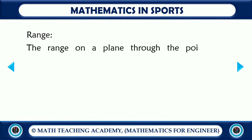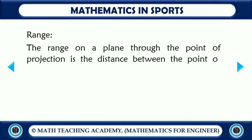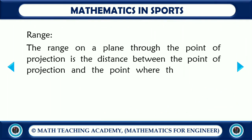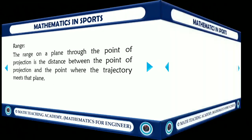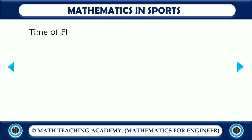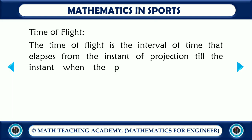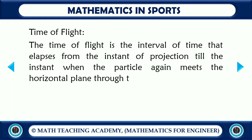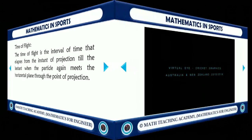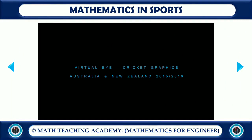The range on a plane through the point of projection is the distance between the point of projection and the point where the trajectory meets that plane — it helps us find the length of the six. The time of flight is the interval of time that elapses from the instant of projection till the instant when the particle again meets the horizontal plane through the point of projection — it helps us find the speed of the ball.